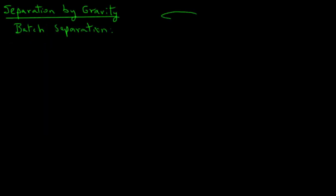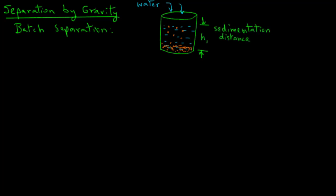Now, we will look at a batch separation process. First we will draw a cylindrical vessel and fill it up with water. Now we put some solid particles, for example sand particles that are of uniform diameter in it. We will notice that after some time, the particles will sink to the bottom. The height of water in this tank is h1, that is the sedimentation distance.